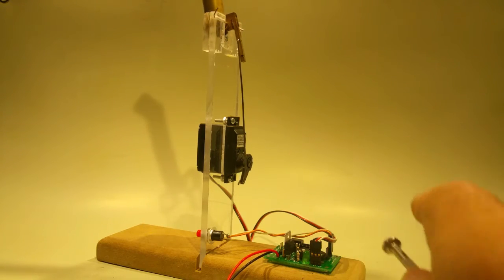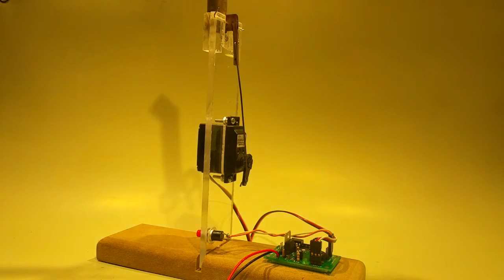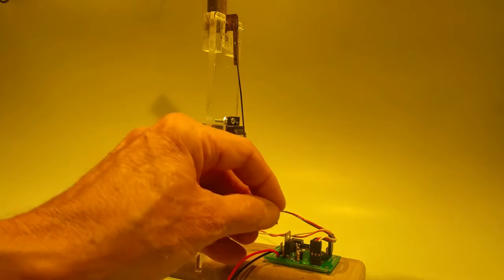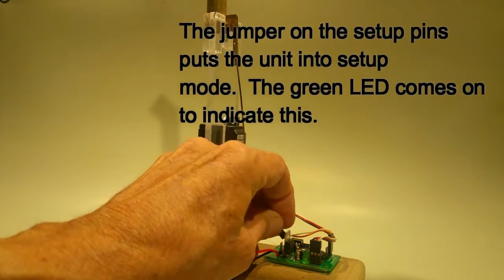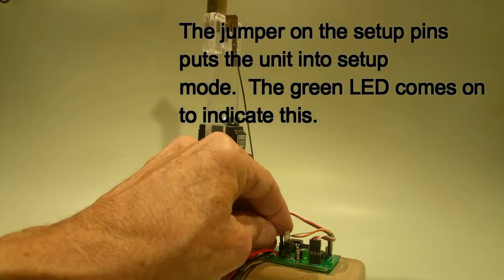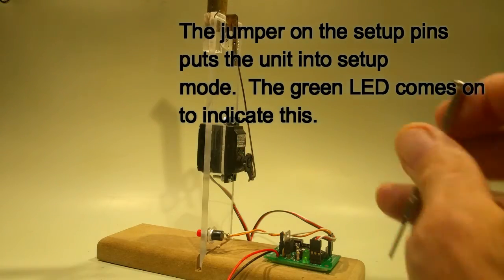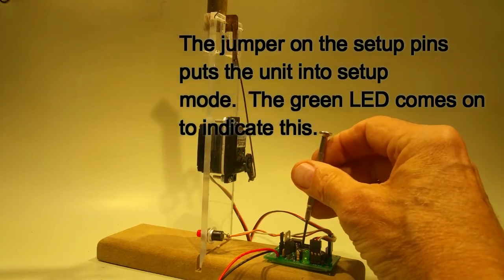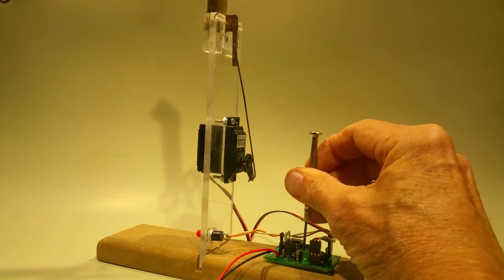All right. To make the adjustments to the position of the servo, let's say we wanted the water spout to go from down to up rather than up to down when you press the button. Put the jumper on the programming pins and you'll notice that the LED stays on pretty much solid. It blinks occasionally just to tell you that it's alive.